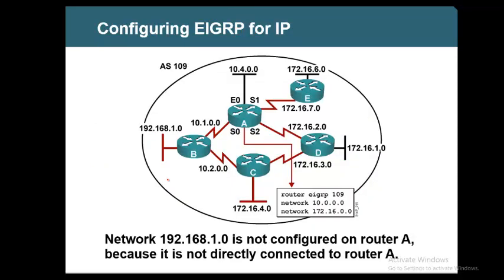Here is a small example. If you are enabling EIGRP on a router that has interfaces with 10.4, 10.1, 172.16, and another 172.16 — four links — and you want to run EIGRP on all four, you can say: run EIGRP on all interfaces beginning with 10, which covers two interfaces, and then run EIGRP on all interfaces beginning with 172.16, which starts it on S2 and S0.